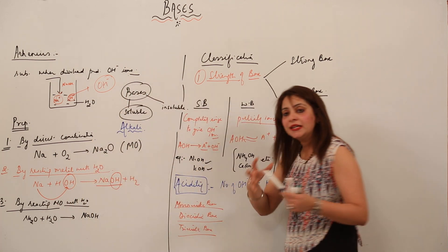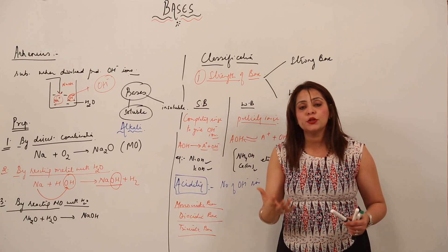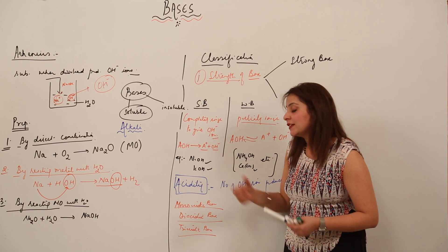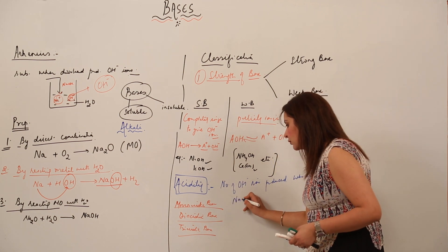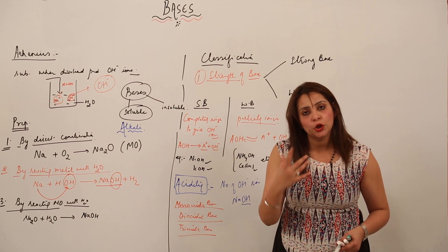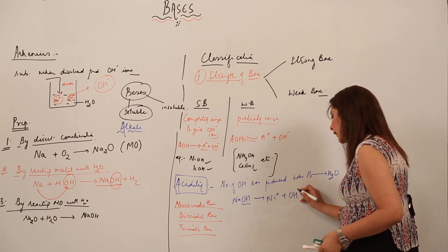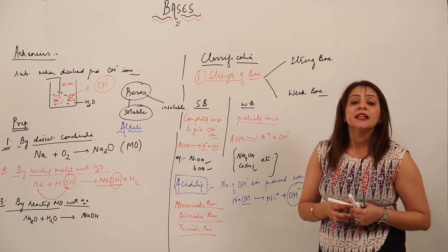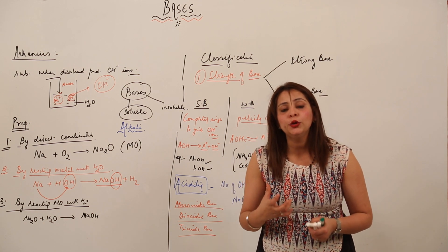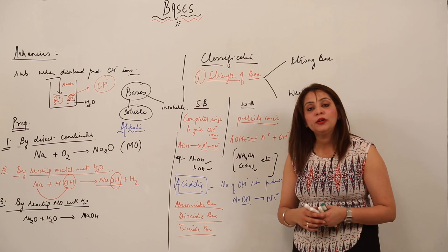We have monoacidic base, diacidic base, triacidic base, and polyacidic base — indicating the number of hydroxide ions produced when dissolved in water. For example, NaOH: one NaOH molecule carries only one hydroxide ion, so when it dissociates it produces one OH⁻ ion per molecule — that is a monoacidic base.